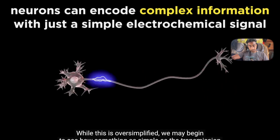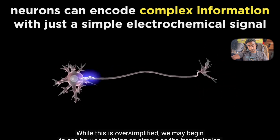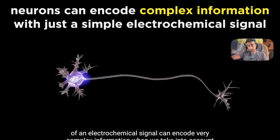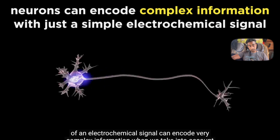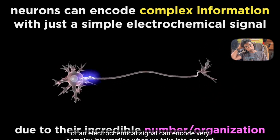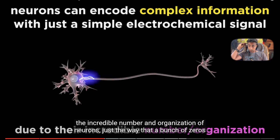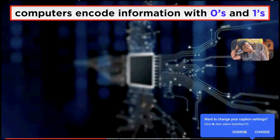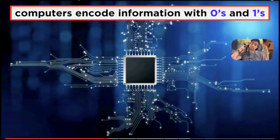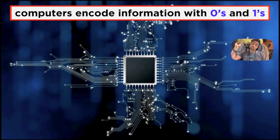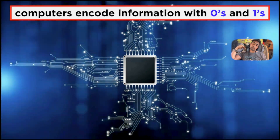While this is oversimplified, we may begin to see how something as simple as the transmission of an electrochemical signal can encode very complex information, when we take into account the incredible number and organization of neurons — just the way a bunch of zeros and ones transmitted through computer circuitry allows it to perform sophisticated tasks.